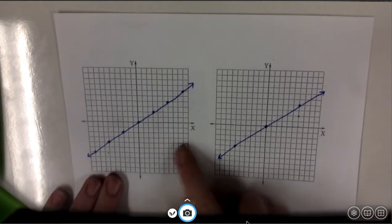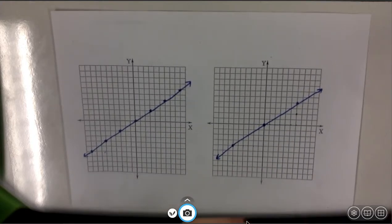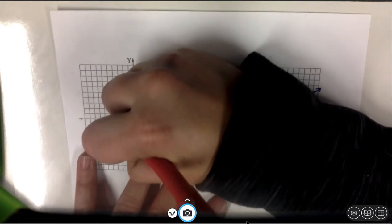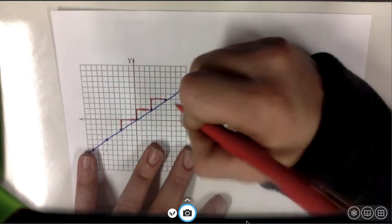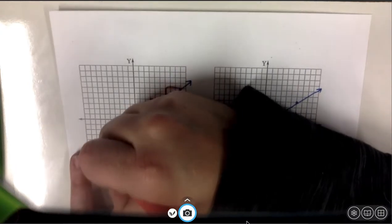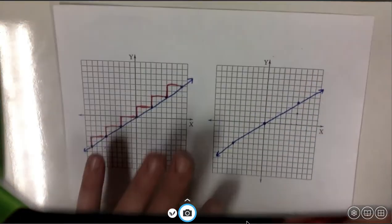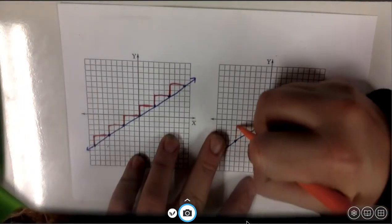These two lines are technically the exact same line. The only difference is that I am looking at these smaller steps here, whereas on this other graph I am looking at bigger steps.